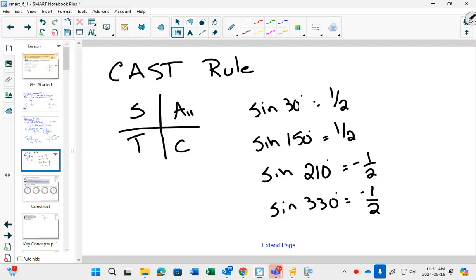So reference angles are important because they create the same number, no matter what. But positives and negatives change based on which quadrant. In grade 11, you learn the cast rule. In grade 12, we'll learn it again, but we'll find out a little bit why. Why is it positive in one and not the other? What is the reason? Okay?